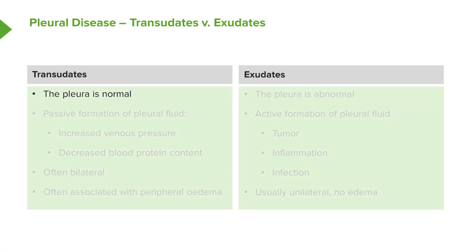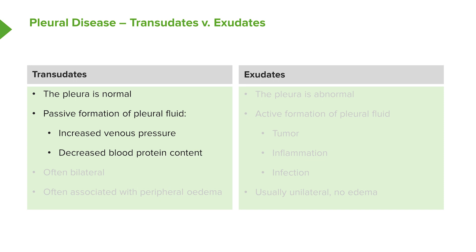The big question with pleural fluid is whether the patient has a transudate or an exudate. In a transudate, the pleura is normal and what you're getting is excessive formation of pleural fluid by a passive transfer across from the blood. This occurs in increased venous pressure, such as heart failure, or a low oncotic pressure of the blood, such as decreased blood protein content.